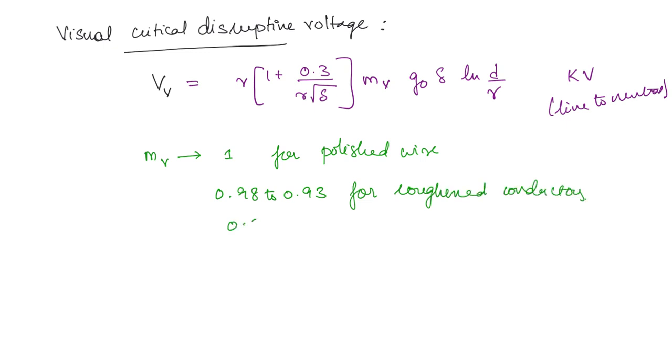And it varies from 0.98 to 0.93 for roughened conductors, and finally 0.72 for the stranded conductors.